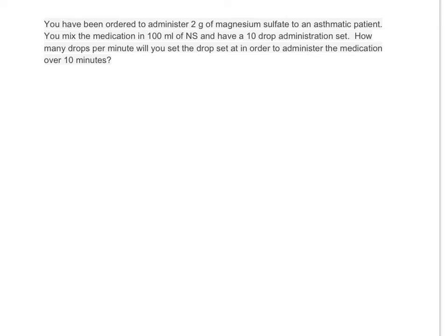We're going to do a magnesium drip rate calculation. This is question number 19 on your MedMath practice exam 2. You have been ordered to administer 2 grams of magnesium sulfate to an asthmatic patient. You mix the medication in 100 milliliters of normal saline and have a 10 drop administration set. How many drops per minute will you set the drop set at in order to administer the medication over 10 minutes?